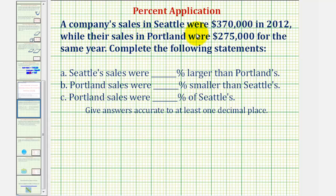A company's sales in Seattle were $370,000 in 2012, while their sales in Portland were $275,000 for the same year. We want to complete the following statements.